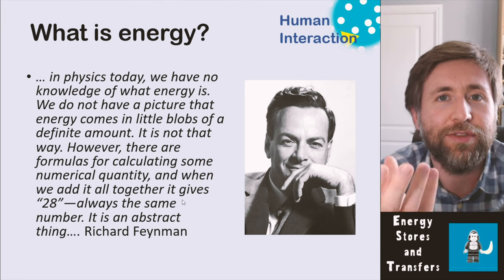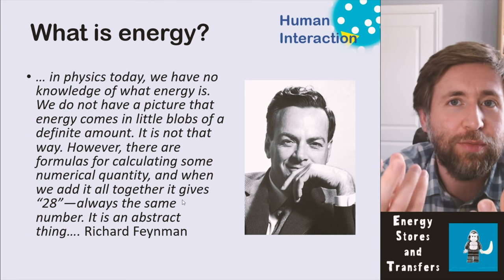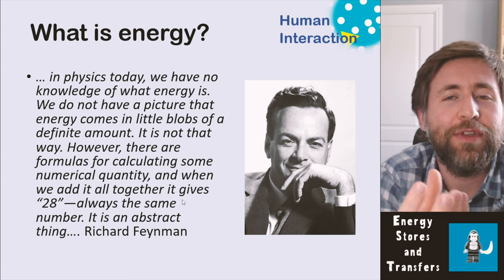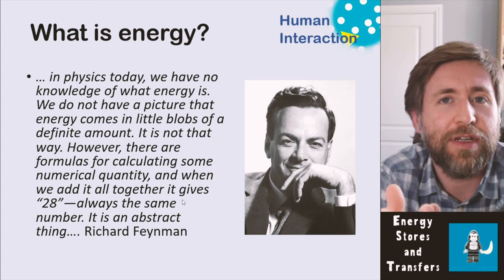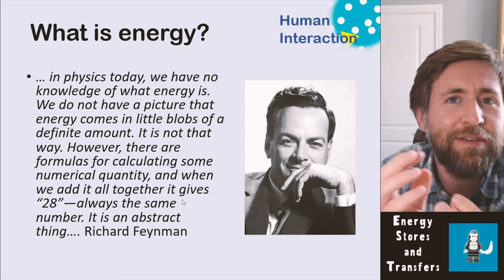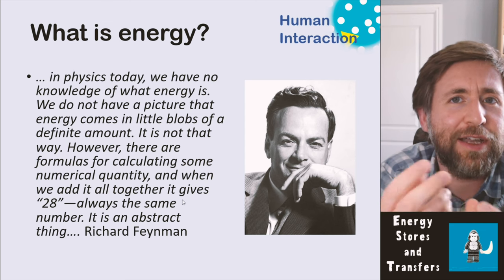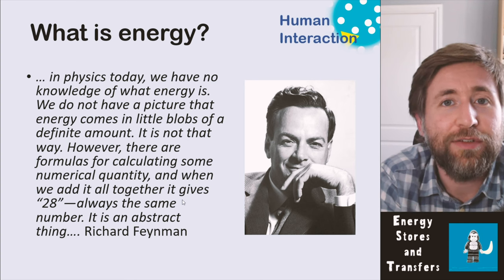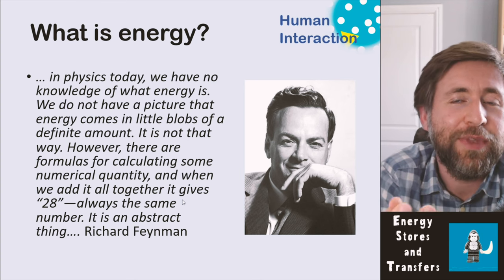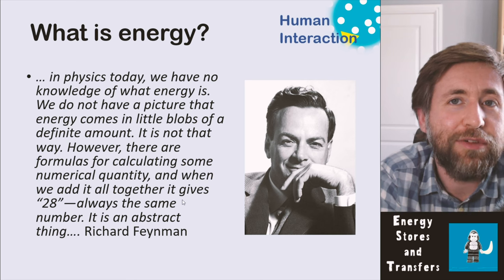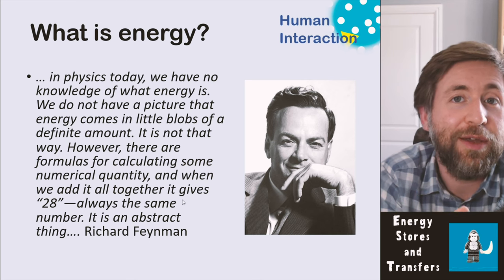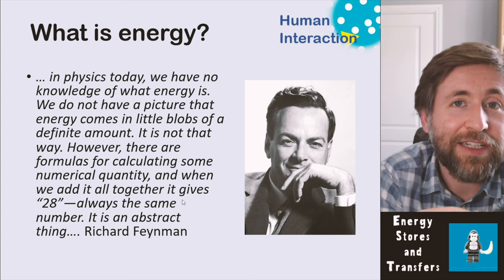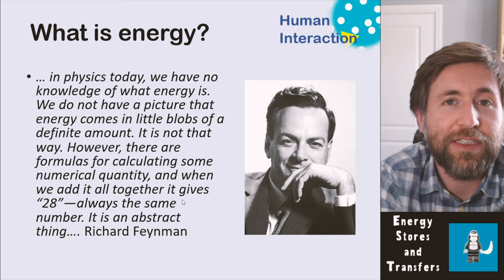When we look at two different stores and we know that energy from one store has been transferred into another, we can calculate them and show they're the same size — the maths adds up. That is our best explanation of what energy is. Feynman talked about it being a universal accounting system. A lot of people say it's a measure of how much you can do, a measure of what change is possible, and energy changes are the drivers of change.